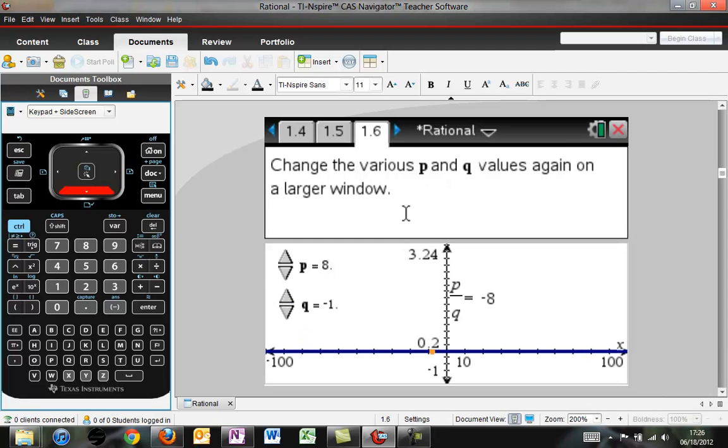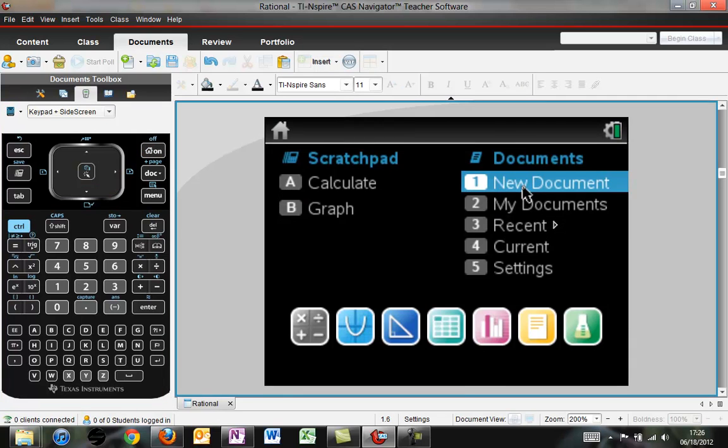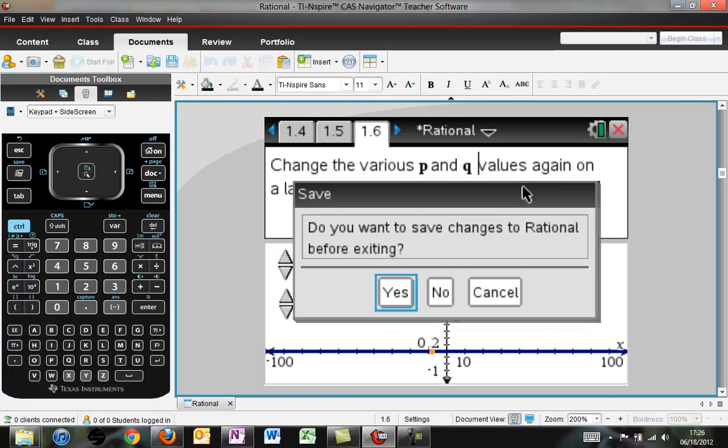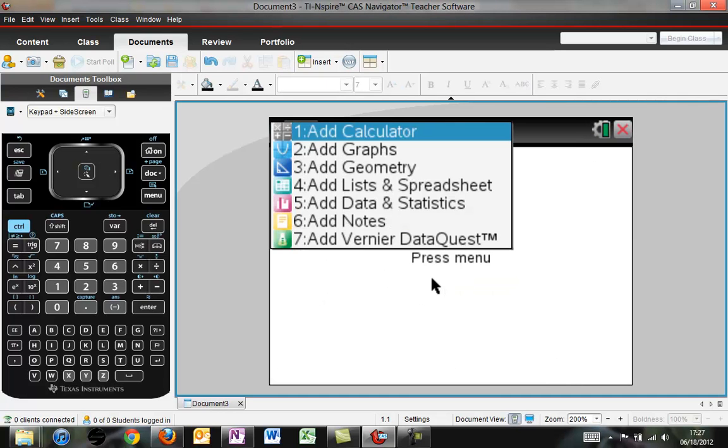Sometimes you may not want to be working in a document that I've created. You may want to create your own. Go back to the home screen. Hit new document. It'll ask if you want to save changes. Typically, if it's one I've sent you, you don't have to. You can hit no. And then you'll see this screen that says what type of thing do you want to add.